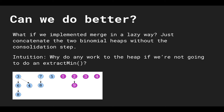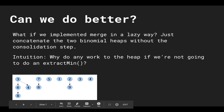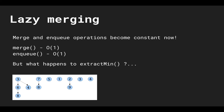Here we have two heaps — one highlighted in blue and one in purple — and when we merge them we literally just concatenate them without worrying about the invariant being violated. Right now we have four trees of degree zero, two trees of degree one, and one tree of degree two, but we don't worry about that. Because of this lazy merge, enqueue and merge operations become O(1). Merge is just concatenating the two lists, and enqueuing is just merging the heap with a single-element heap, so enqueue becomes constant as well. But what happens to extract min?